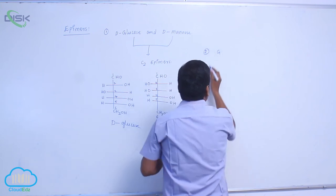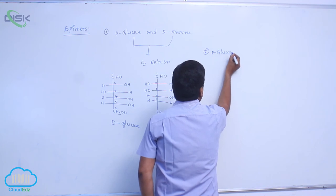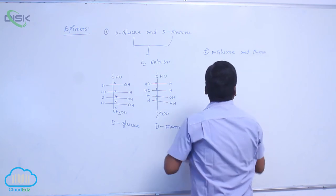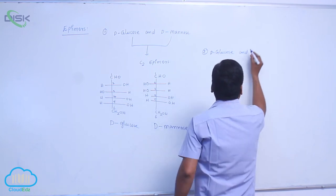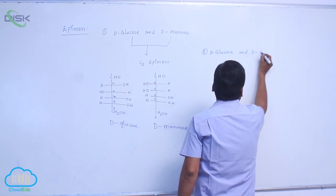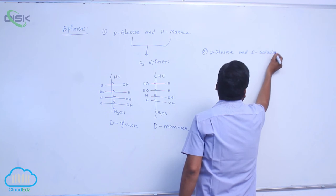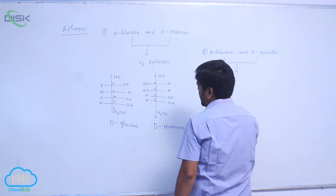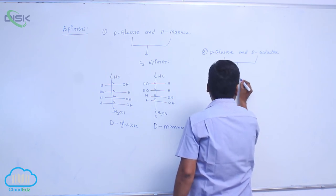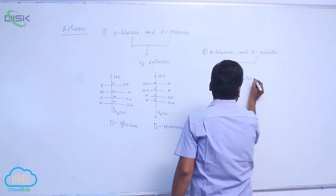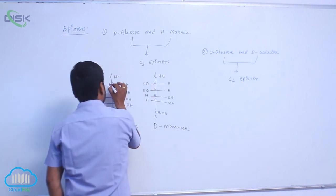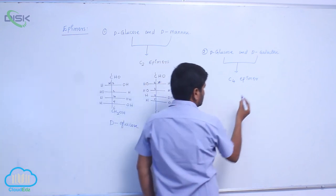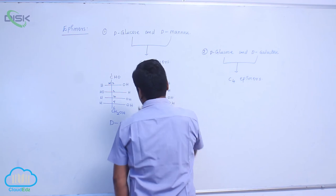The second example is D-glucose and D-galactose, which are known as C4 epimers. So we have C2 epimers for glucose-mannose and C4 epimers for glucose-galactose.